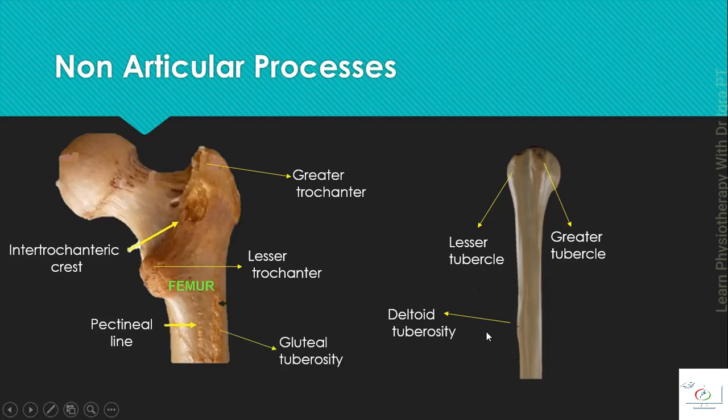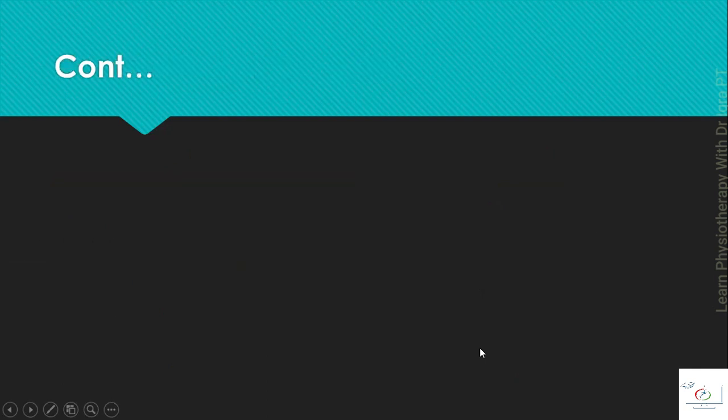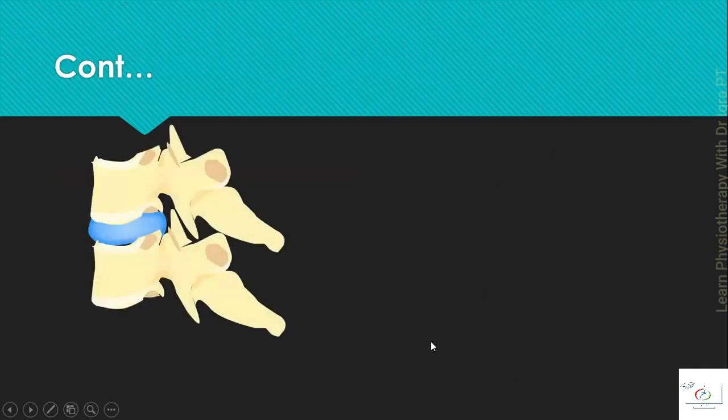Then the spinous process. Spinous process is a slender, sharp process, as the spinous process of the vertebra.